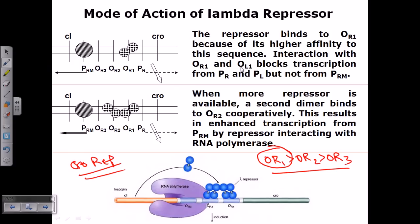The interaction with OR1 and OL1 blocks transcription from PR and PL, but not from PRM. This blocks transcription in the direction required to produce proteins for the lytic cycle, which is logical because we don't want lytic cycle — we want the lysogenic cycle. So it blocks all the genes required for lytic cycle protein products and promotes the lysogenic cycle instead.